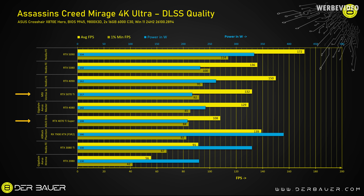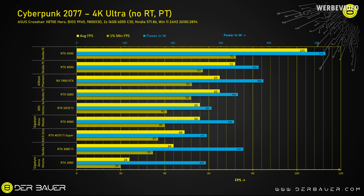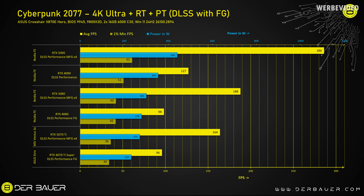In Cyberpunk, without ray tracing and without path tracing, the 5070 Ti is identical in performance to a 4080, but consumes 14% less power — which is definitely important. In this scenario, the 7900 XTX is much faster and on the level of a 5080. However, if we enable DLSS performance with frame generation, ray tracing, and path tracing, the 5070 Ti benefits from its newer tech and can beat the 4070 Ti Super on average FPS. The 1% low difference is smaller, and subjectively it doesn't feel that different, likely due to the extra latency introduced by frame generation.